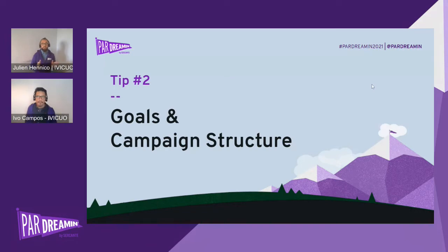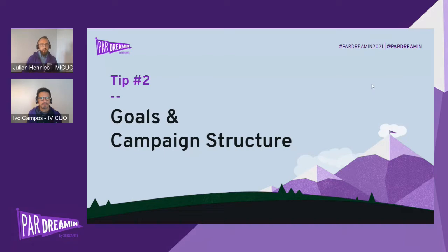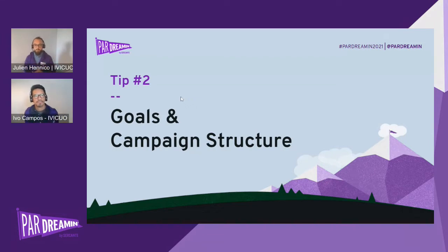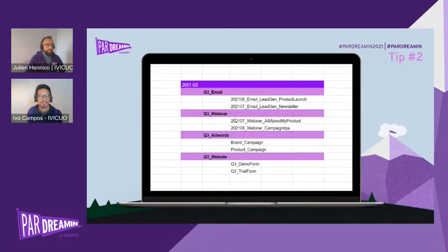Thanks, Ivo. Tip two focuses on how to build the right campaign structure, and first of all it is all about aligning stakeholders on the definitions. When we start working on a campaign structure project, we often see organizations where people are organizing their campaigns with parent campaigns to keep track of time periods, different channels, conversion points, and so on, relying on a lot of parent campaigns and naming conventions to find out what's happening in their strategy.